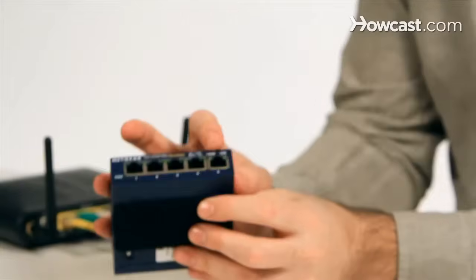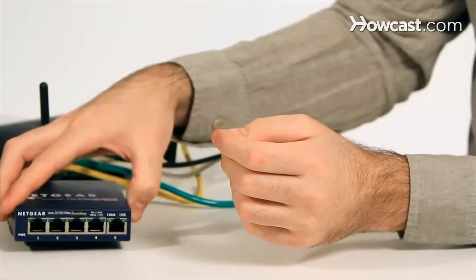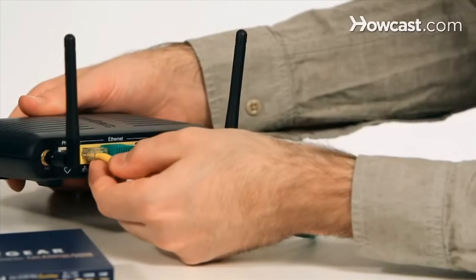As you can see, the Ethernet switch just has a bunch of ports on it. So to connect it to the network, what I have to do is first take one of the ports that are already connected to the network and move them over to the switch.